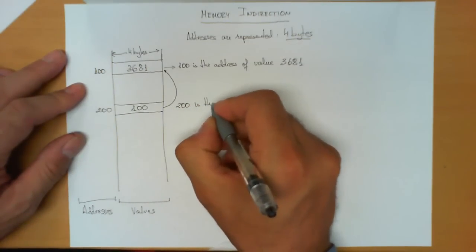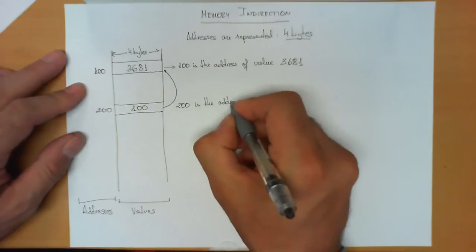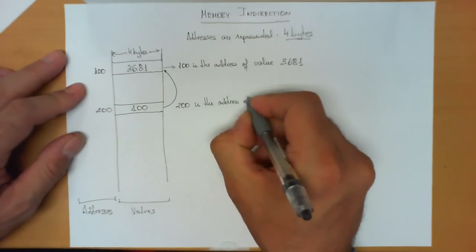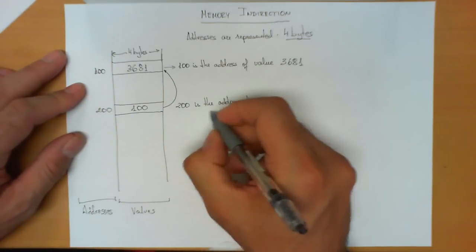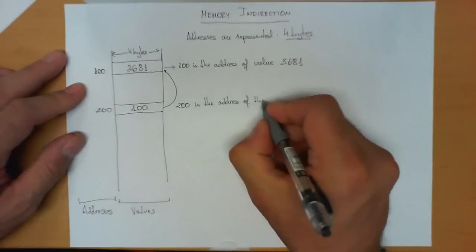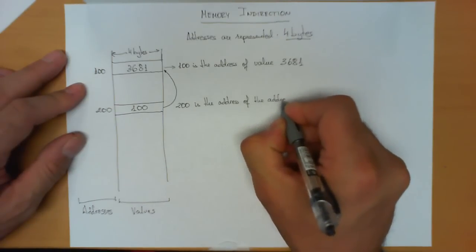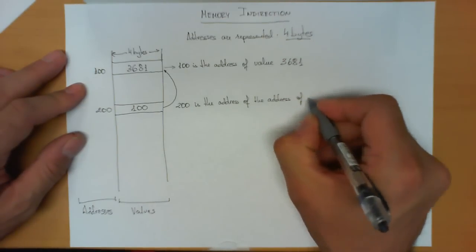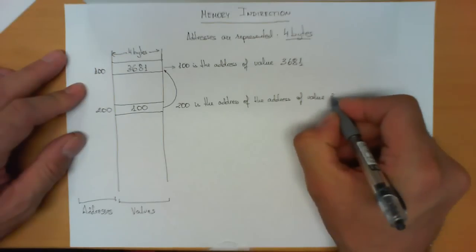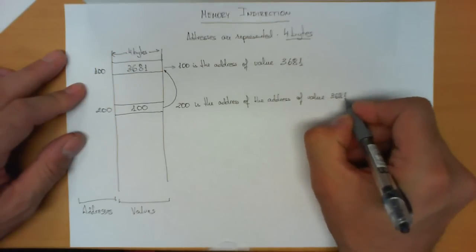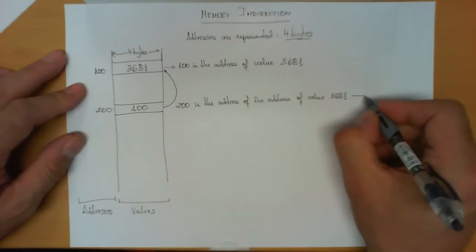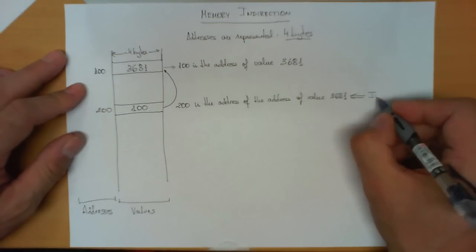Therefore, what we can say is that 200 is the address of, not the value because we are not accessing directly the value, but the address of the value 3681. So we can see here is that rather than accessing directly to this data, what we are making is an indirection.